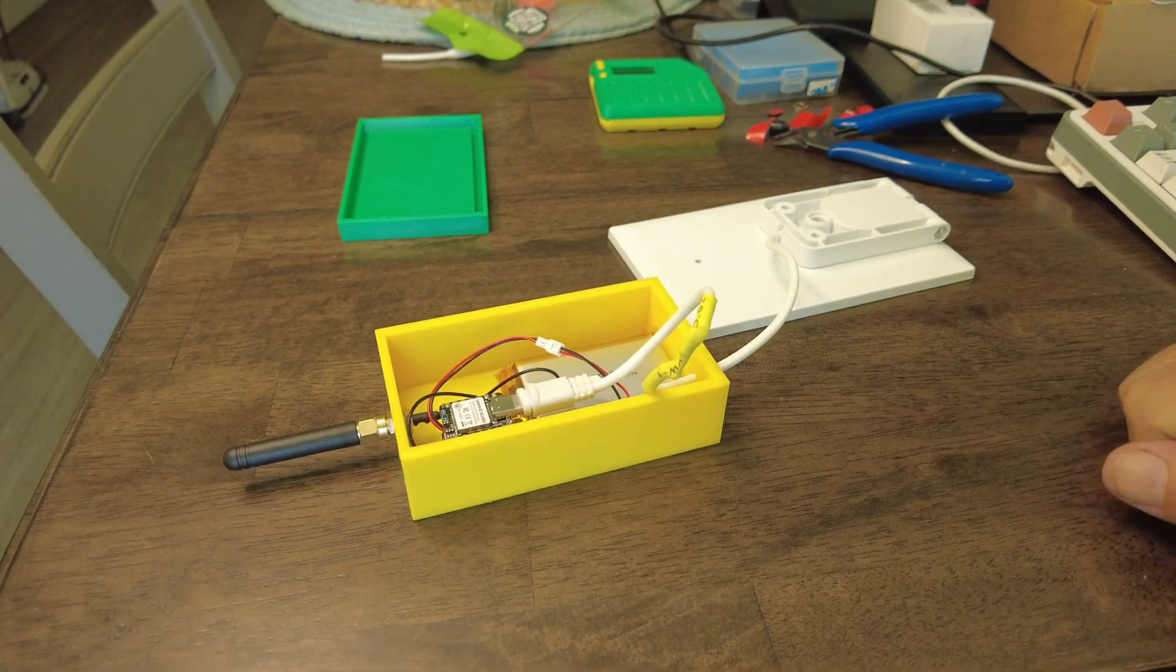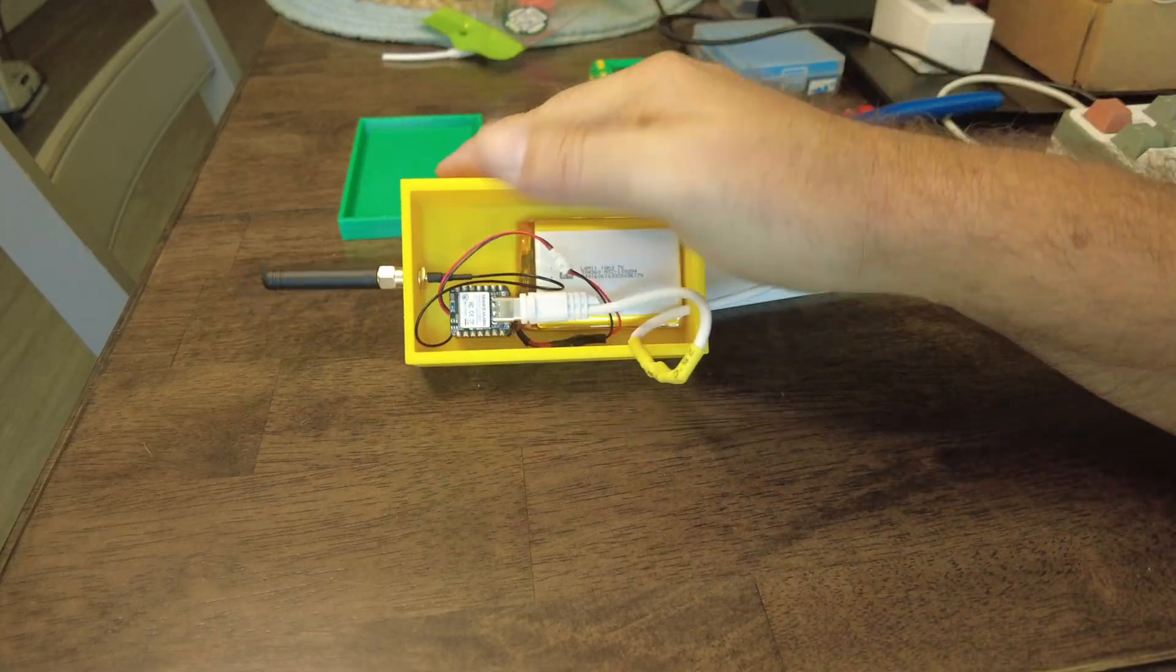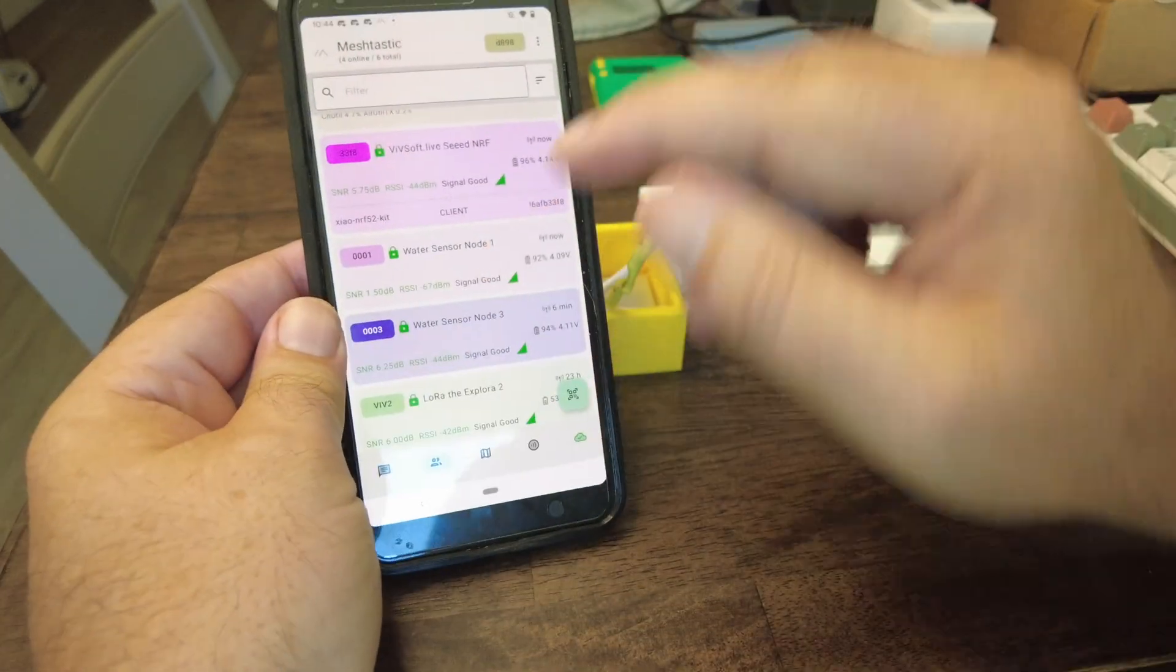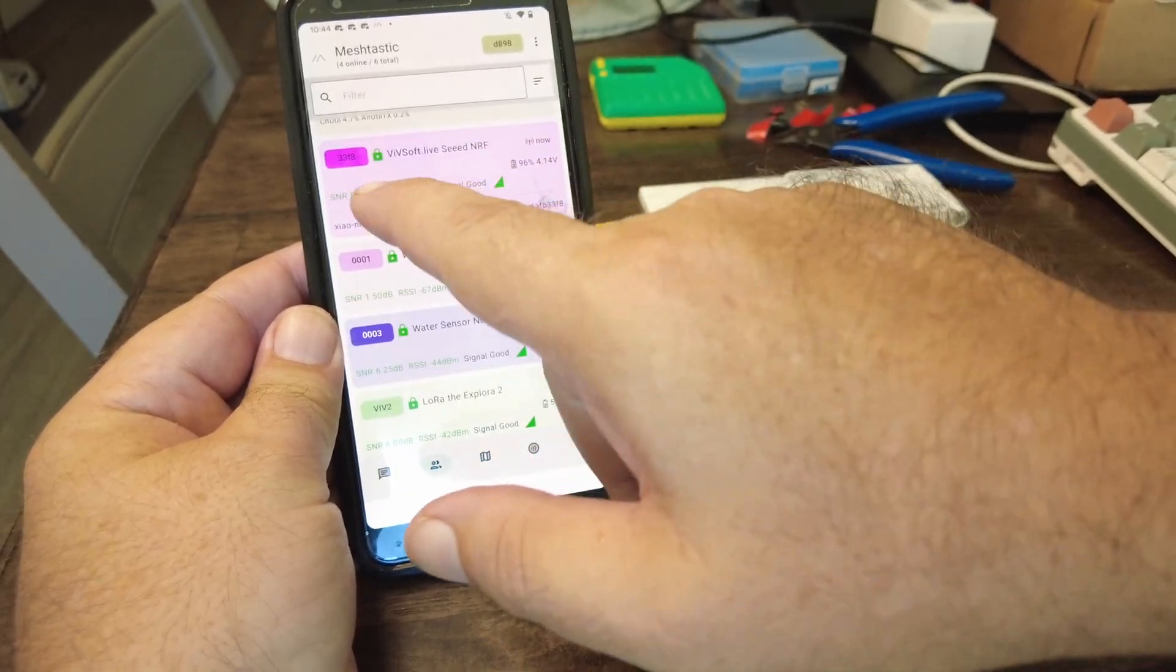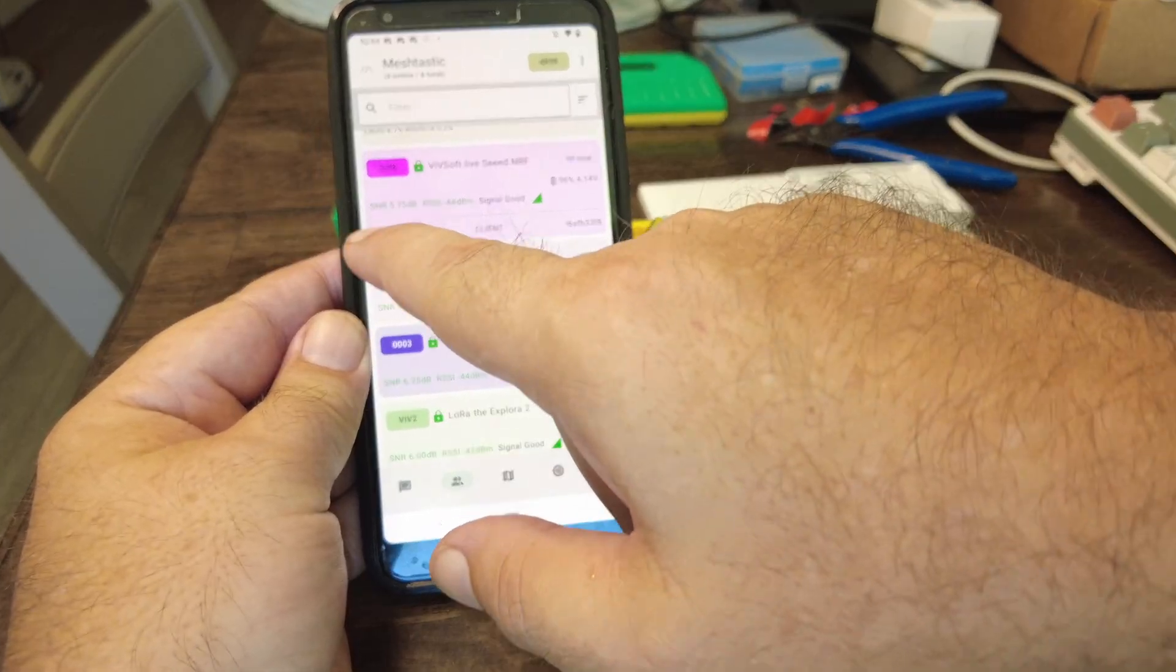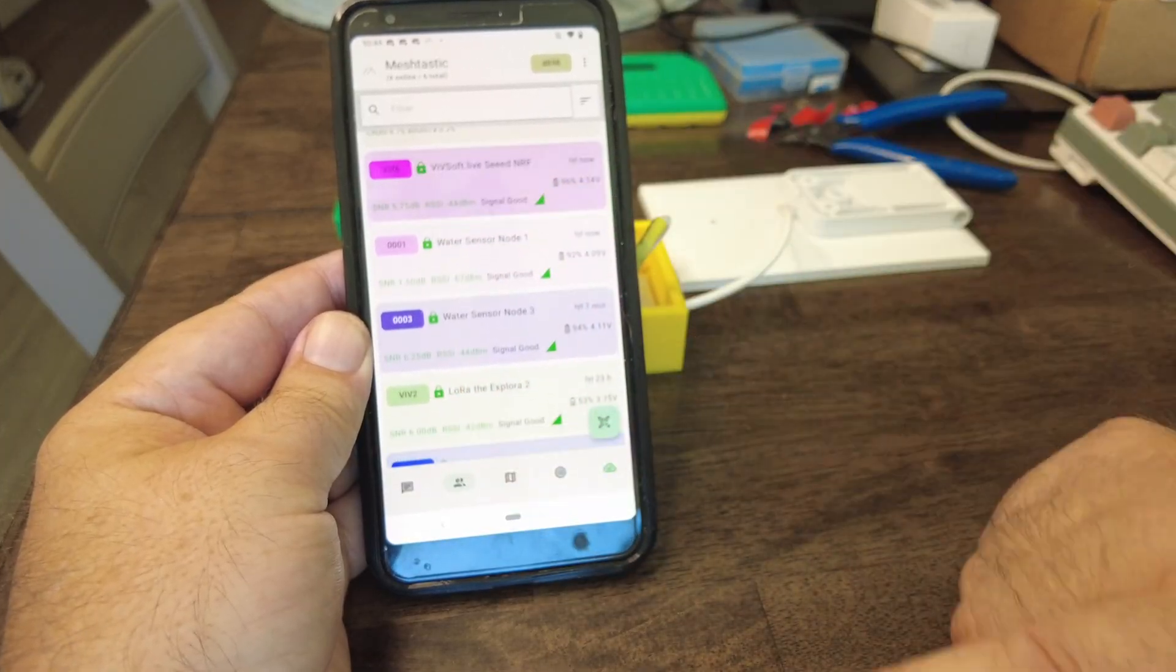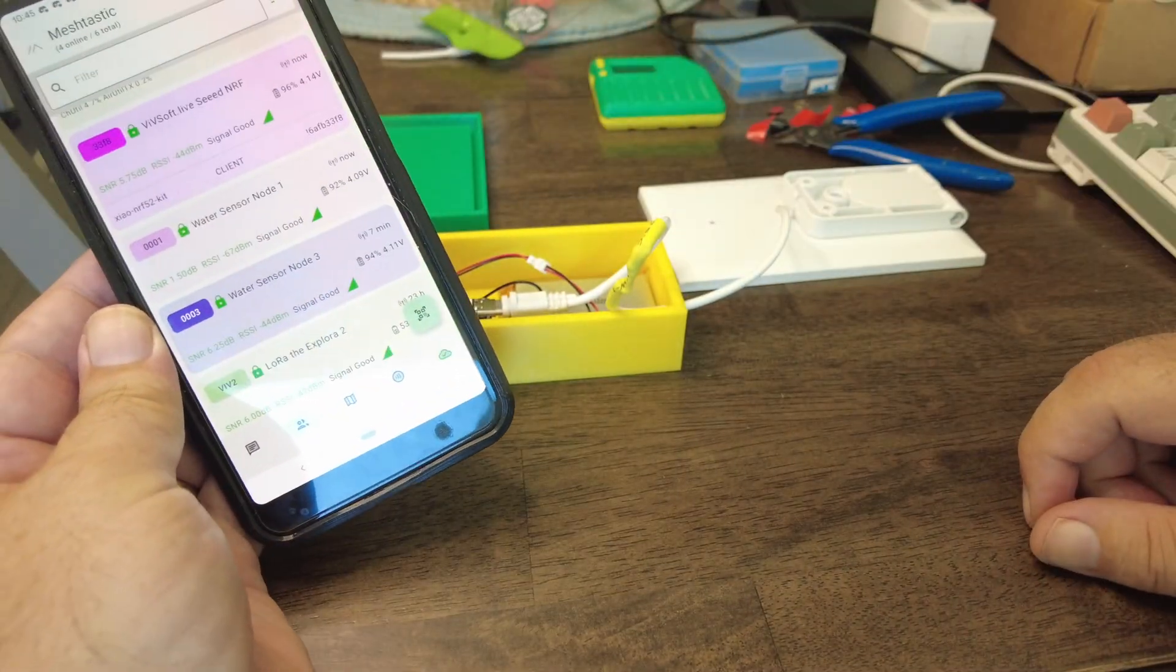Let me see if I can see it. I actually previously just flashed this little seed on flasher.meshtastic.org. And there it is. I gave it this name, Meshtastic Seed NRF. And we can see it's a ZAU NRF kit in client mode. It's 96% battery, signal good. It's up and running.